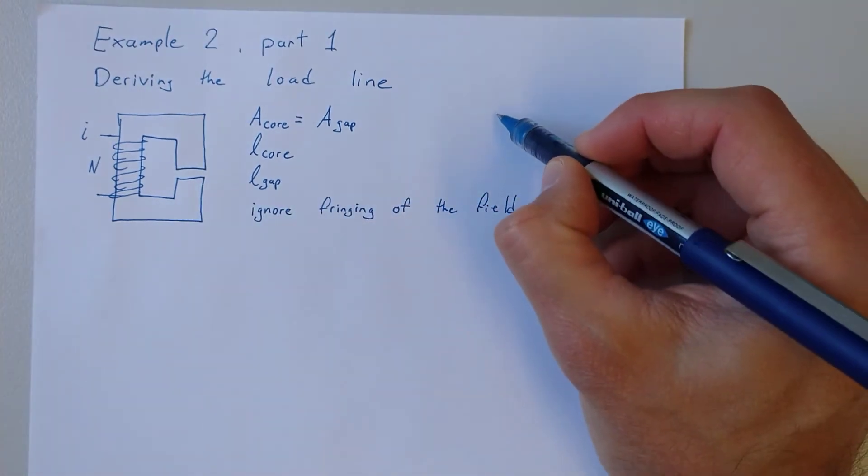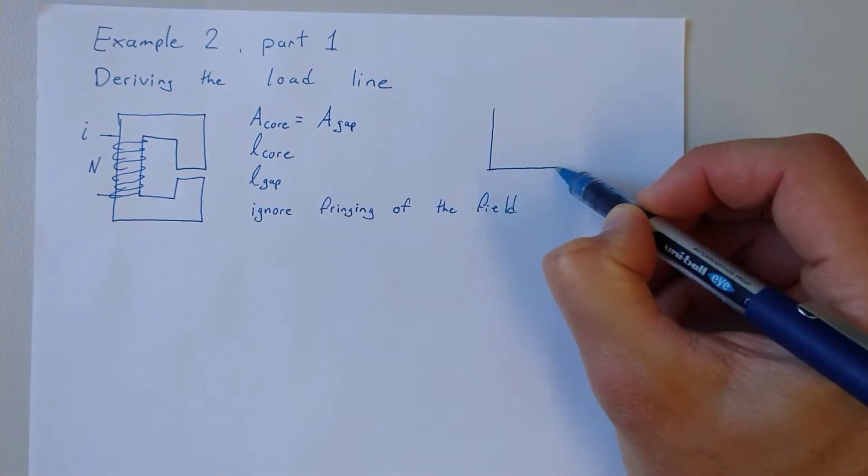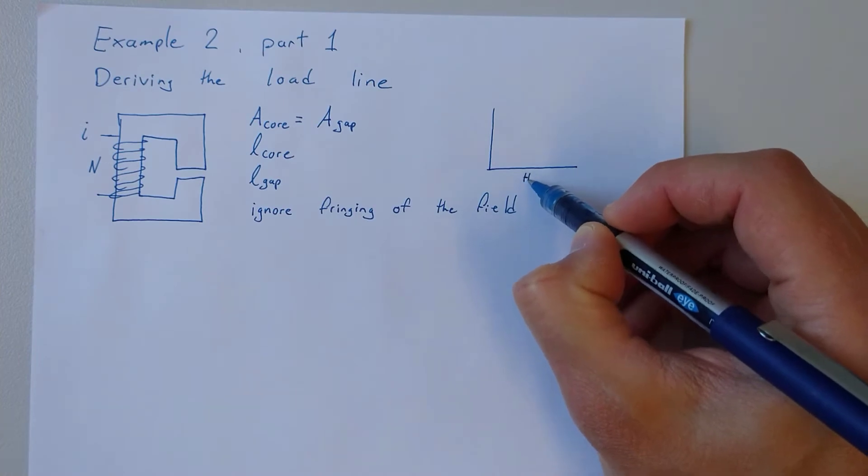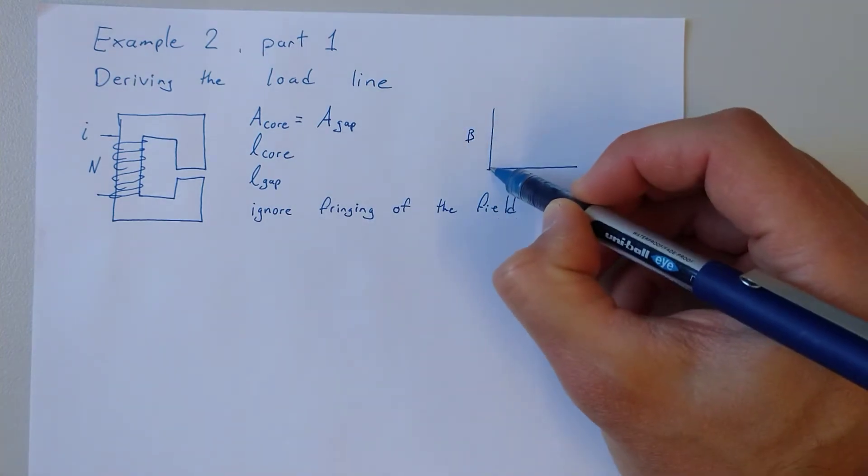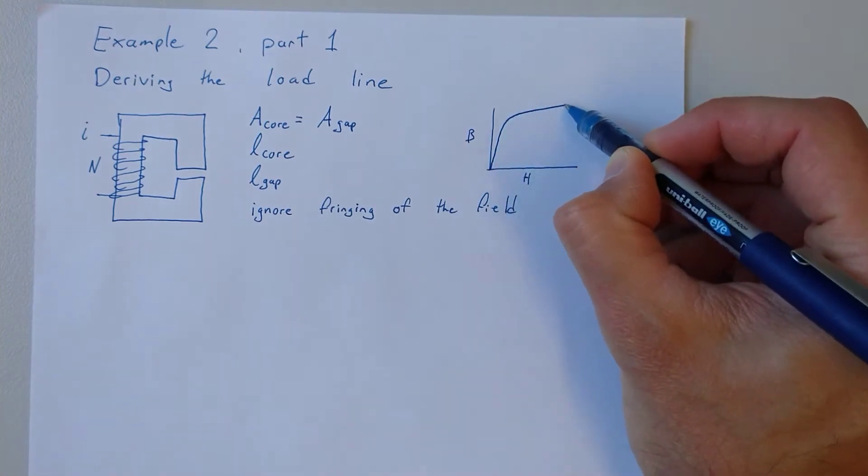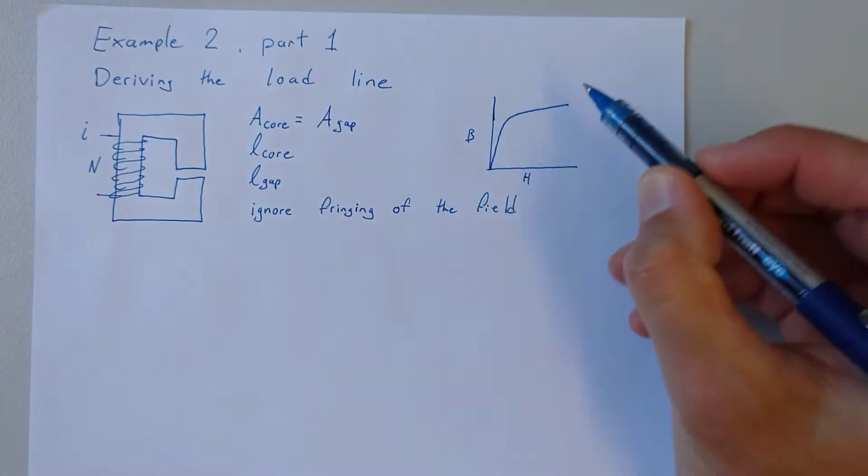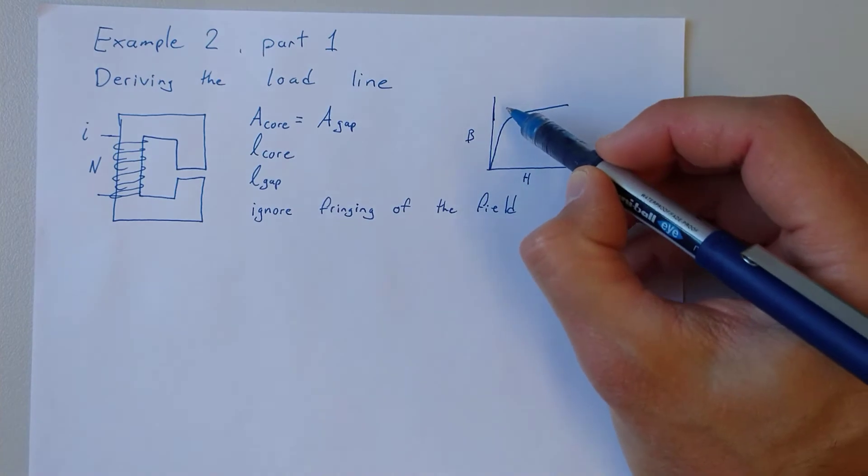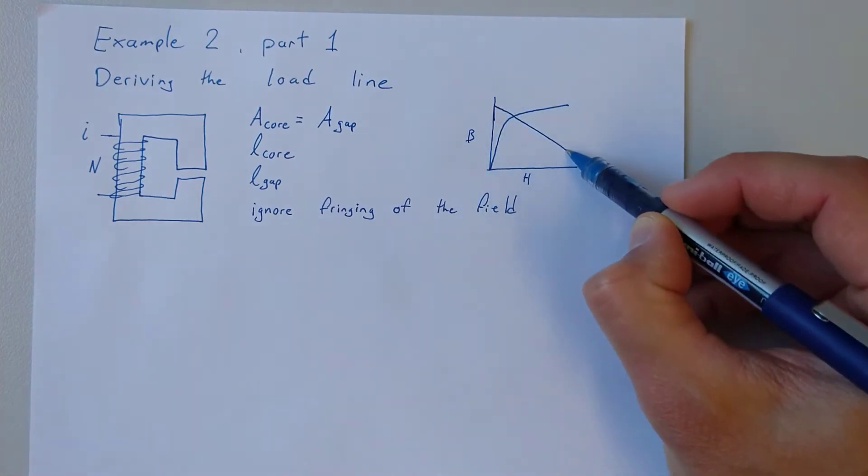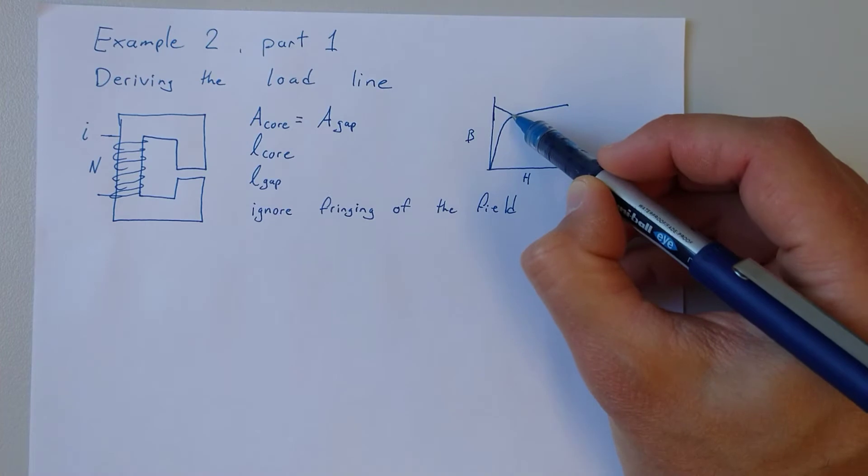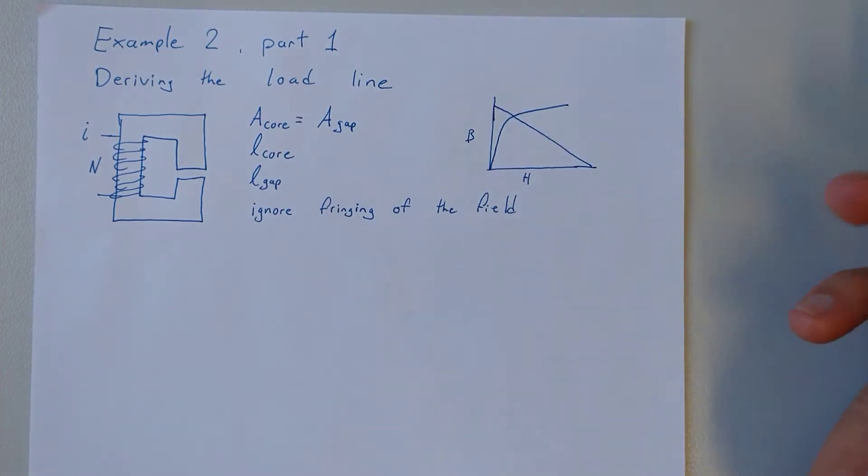So this material will have some nonlinear BH curve. Just to remind you, we'd have H here, B here. On a linear plot, it's going to look something like that. And we need to find the operating point. The goal of the operating point is to set up a situation where we can create another equation and determine the intersection of that either graphically or using a computer to find the operating point.